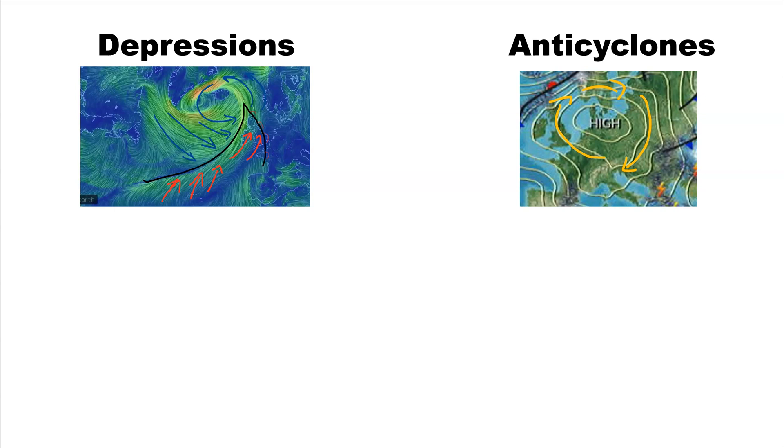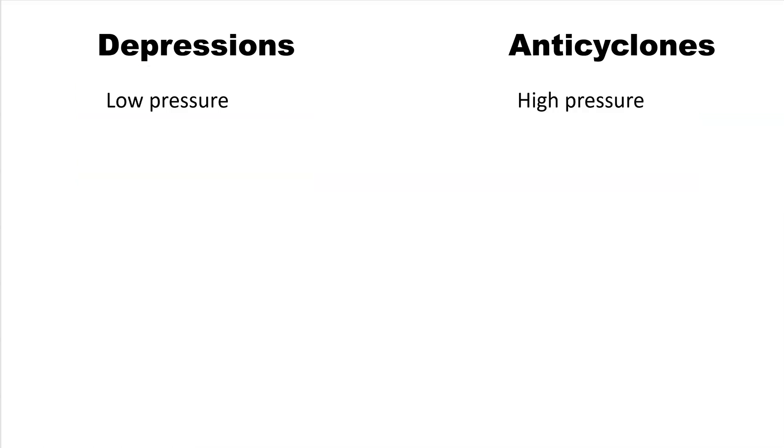Let's look at some of the similarities and differences. Depressions are low pressure, anticyclones high pressure. Depressions have fronts, anticyclones don't have fronts. Depressions, because they've got fronts where the air rises, cools, and condenses, have cloud and rain. Anticyclones, because it's high pressure there, the air falls. The air falls, it warms, so you're not getting condensation, so you're not getting cloud and rain.